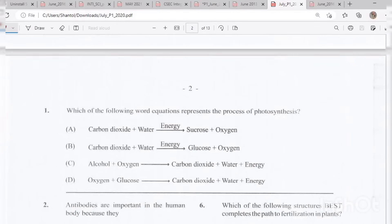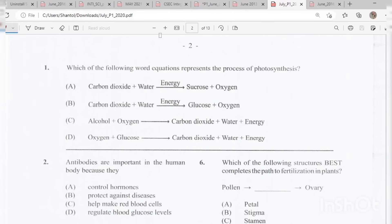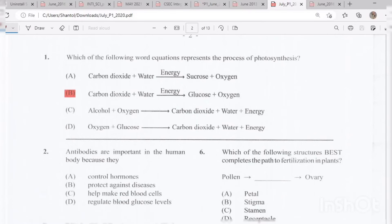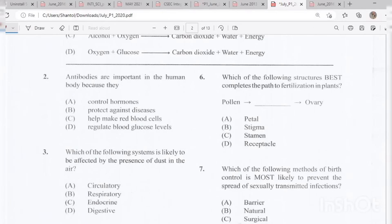Question 1: Which of the following worded equations represents the process of photosynthesis? The answer is B. Question 2: The answer is B, protect against diseases. Question 3: Which of the following systems is likely to be affected by the presence of dust in the air? The answer is B, the respiratory system.